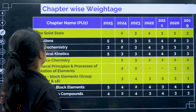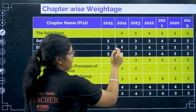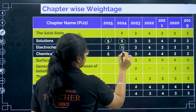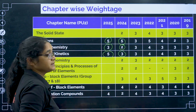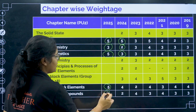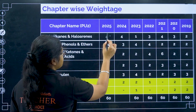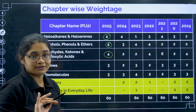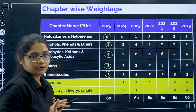Now moving to chapter-wise weightage for PU2. Solutions: five questions in both 2024 and 2025. Electrochemistry: two questions in 2024, three in 2025. Chemical kinetics: three questions in 2024, but five in 2025. D and F block: five questions. Coordination compounds: four questions. Haloalkanes and haloarenes: four questions. Alcohols and phenols: four questions. Aldehydes: four questions. Amines: three questions. Biomolecules: three questions.